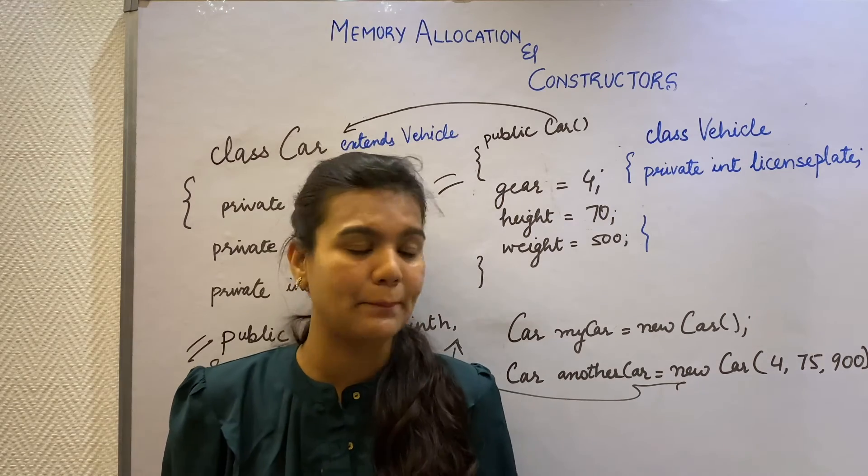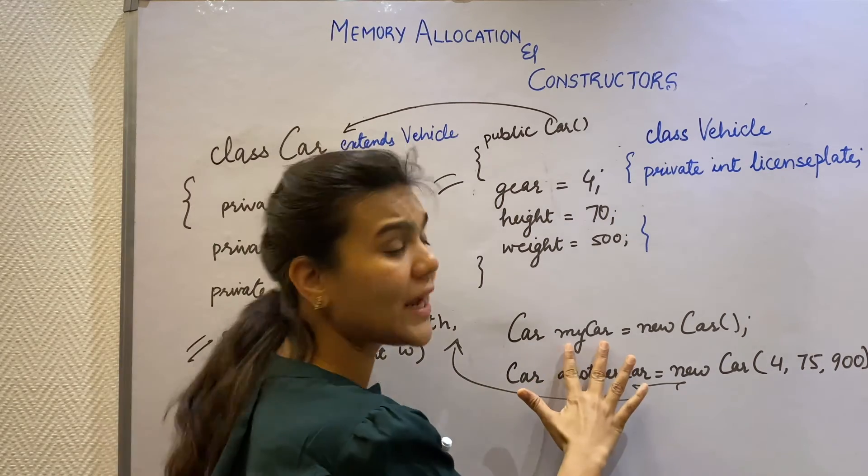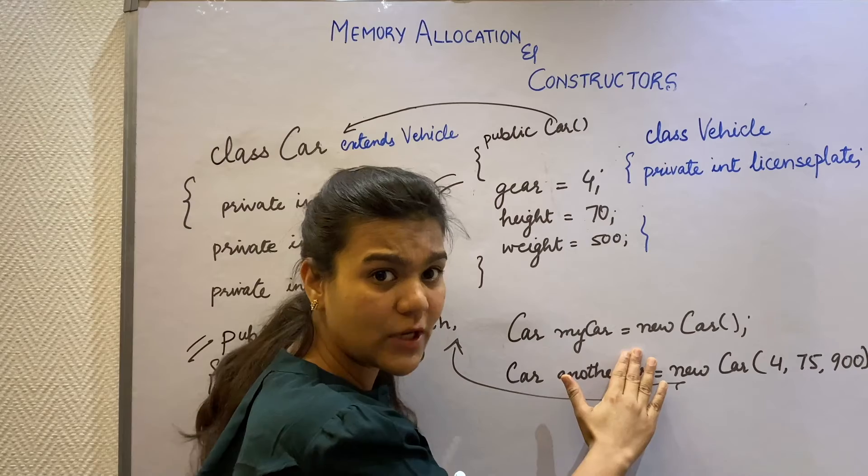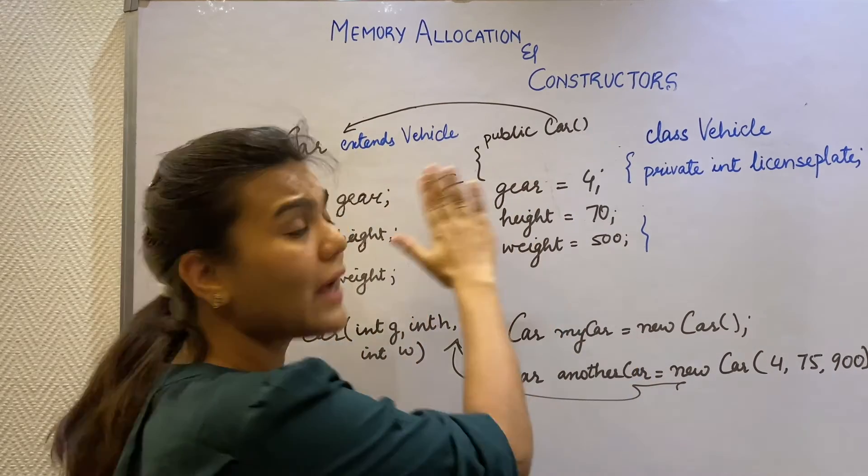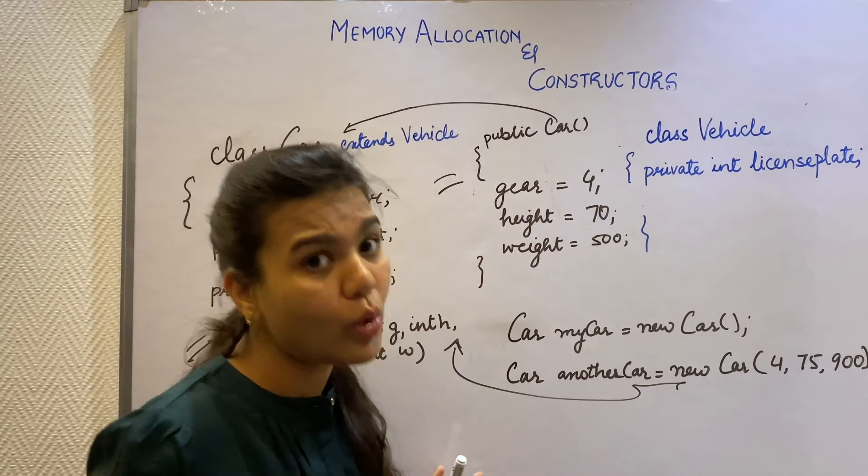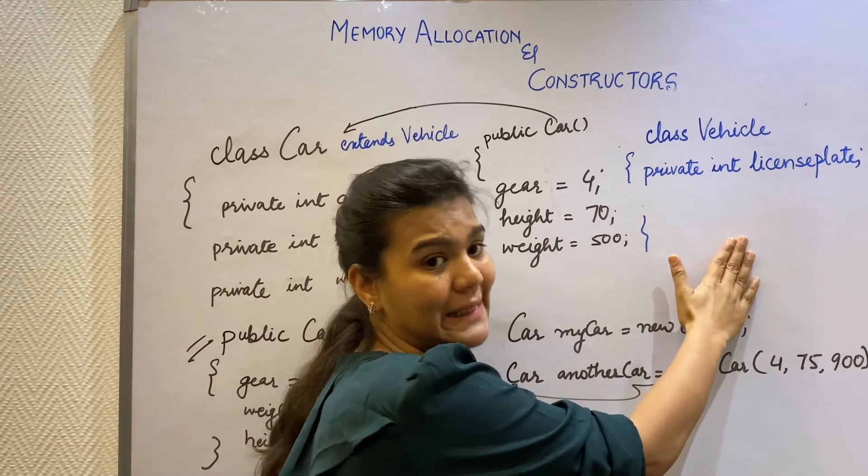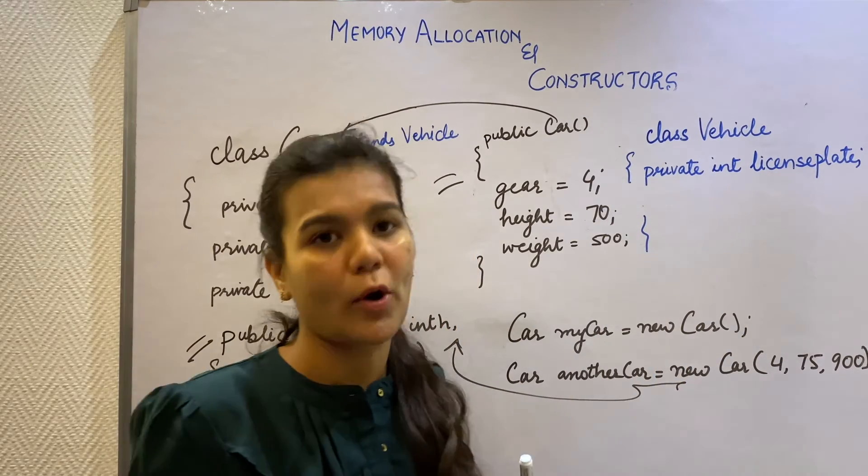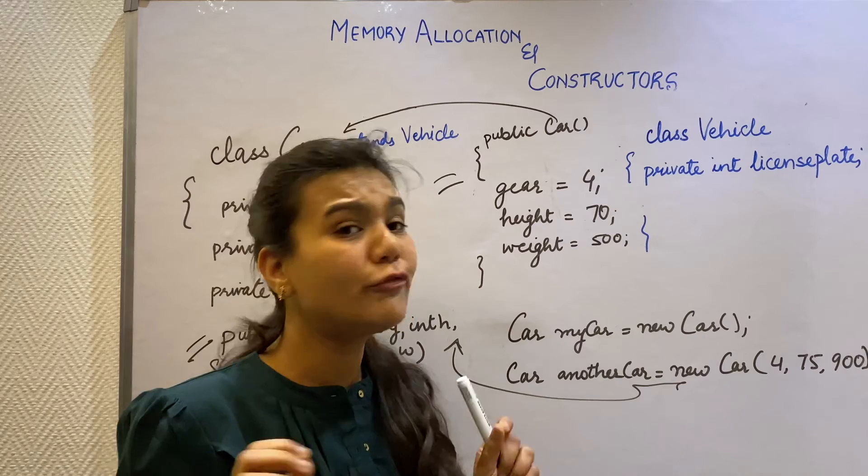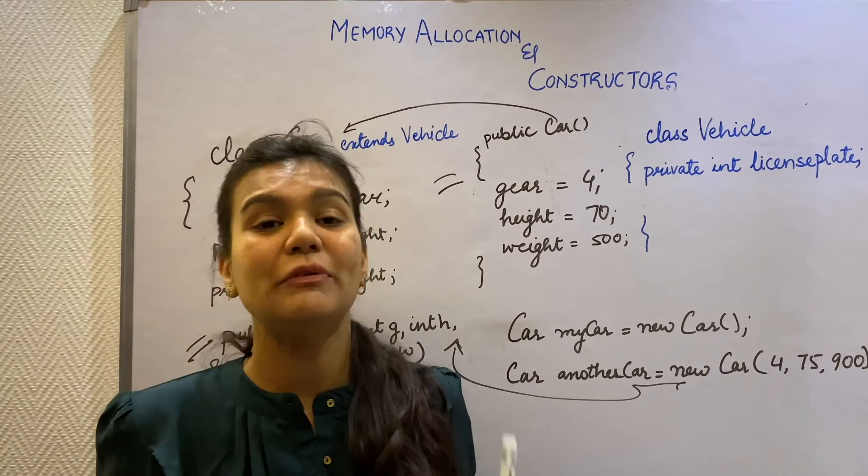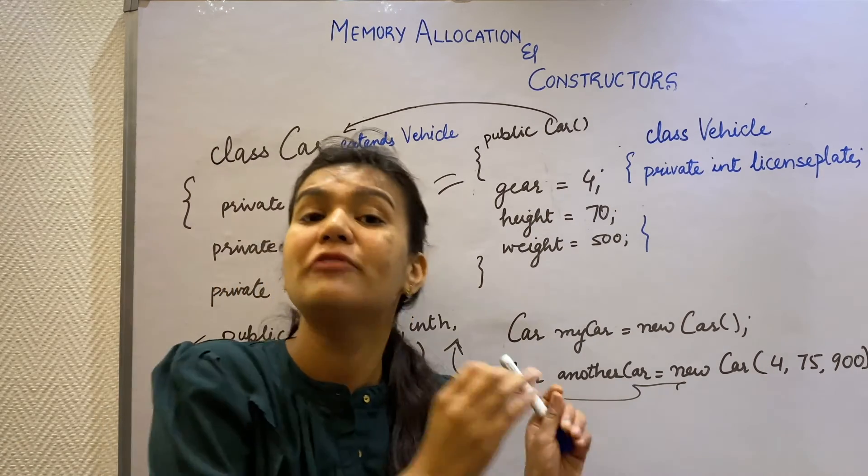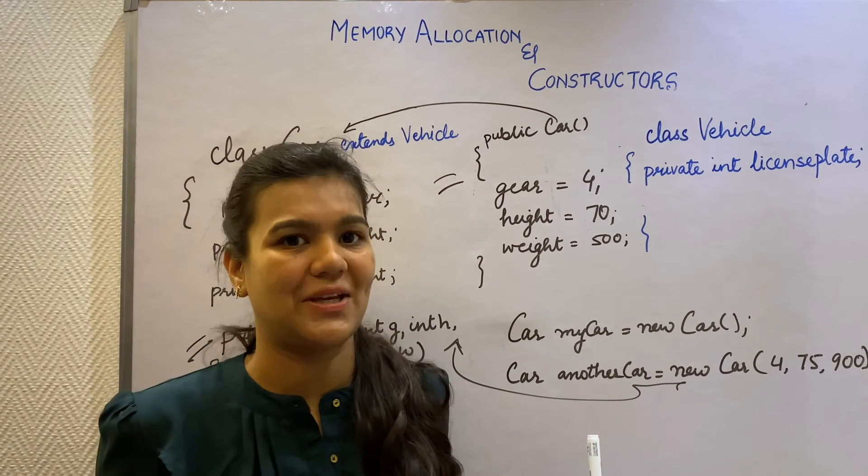Now let's understand with this example, when I create my child class, that is my car class object, the constructor of the car class gets called along with the constructor of the vehicle class. Why and why is it important? Because to get a fully formed car object, we need a fully formed vehicle class object before the car object.